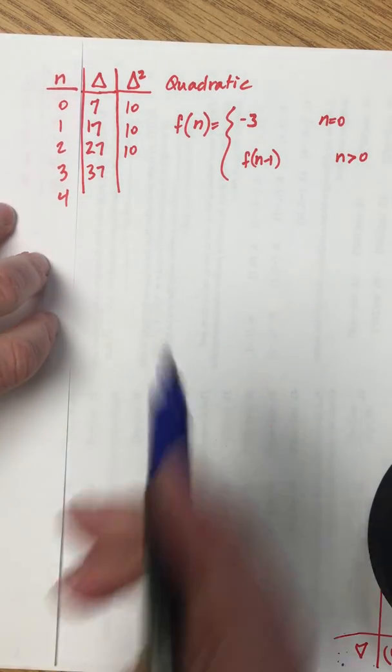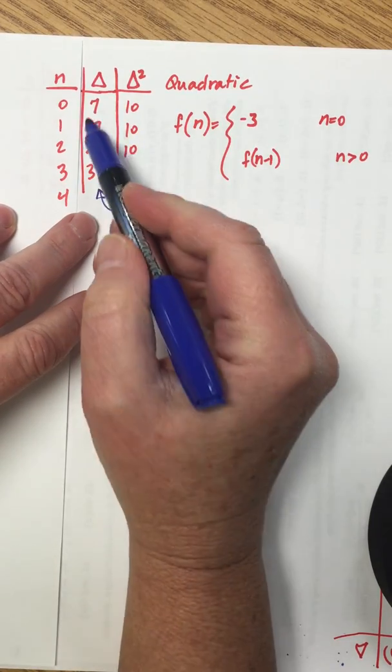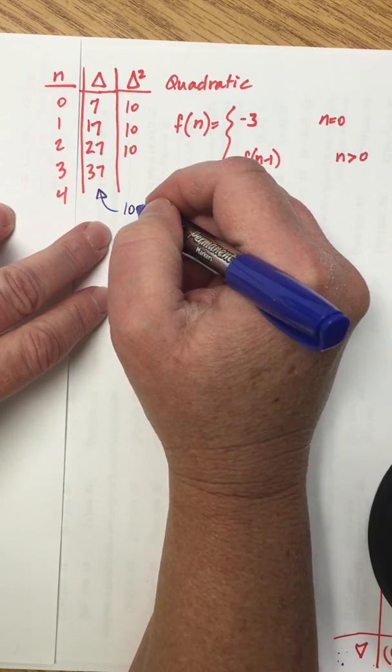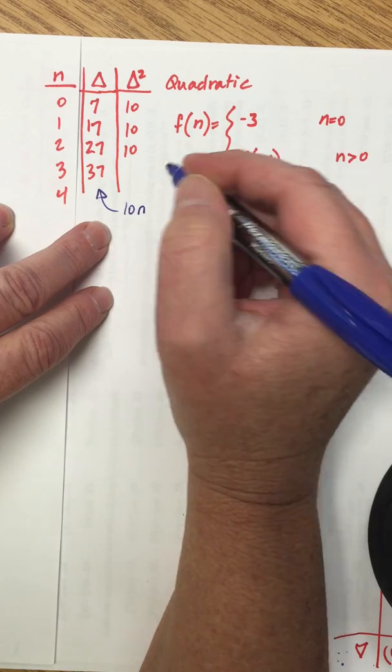So we're going to write an expression that agreed with this output right here. We would know it had a slope of 10, we would multiply that by n, and then we would add the y-intercept which would be 7.